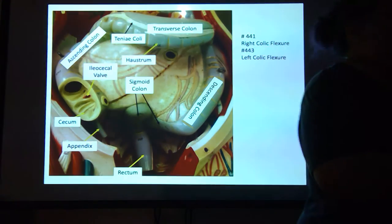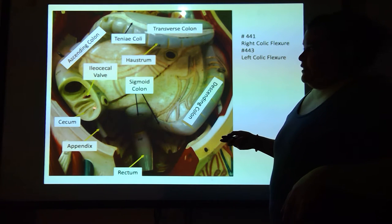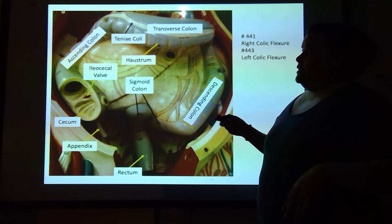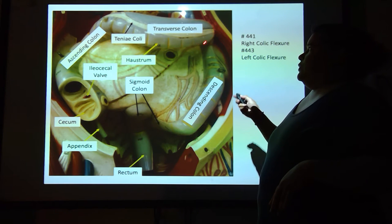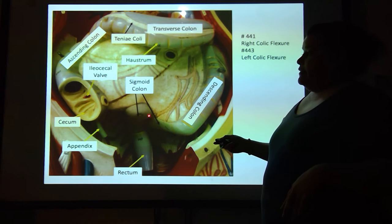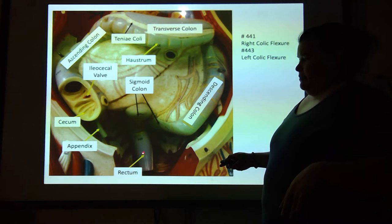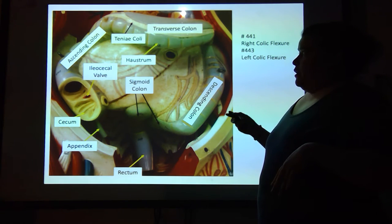So again, looking at the model: you've got the ileocecal valve, the cecum, there's the appendix, the ascending colon, there's the right colic flexure, the transverse colon, left colic flexure, the descending colon, the sigmoid colon, the rectum. The anus is actually down below that on the model.